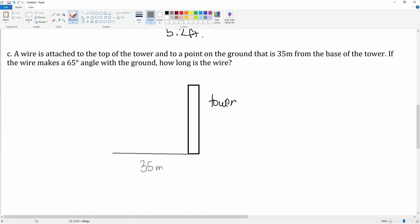If the wire makes an angle with the ground, so here is going to be the wire. That is the wire. And then it makes a 65 degree angle with the ground. We want to see how long is the wire, which is the hypotenuse here.